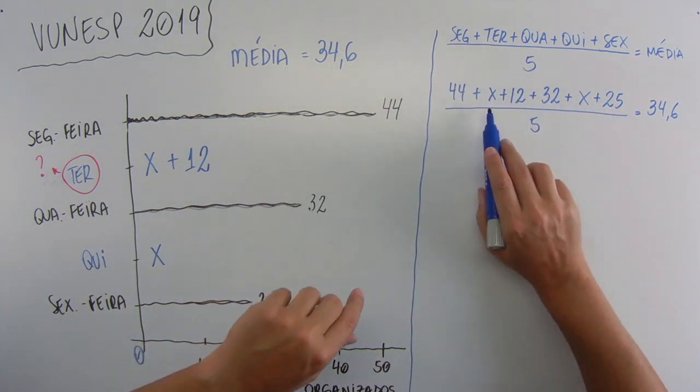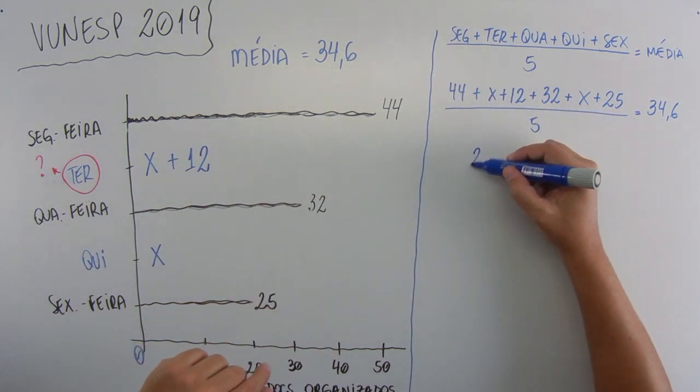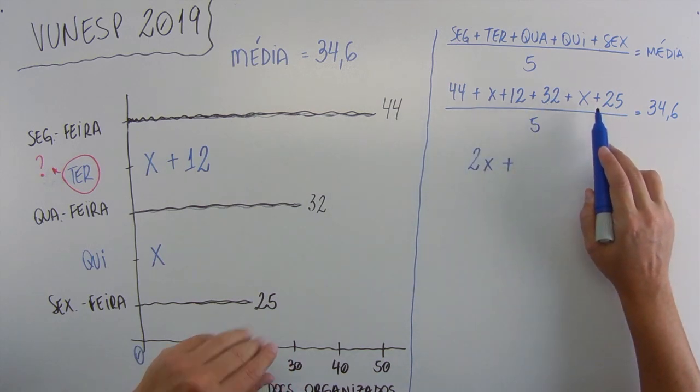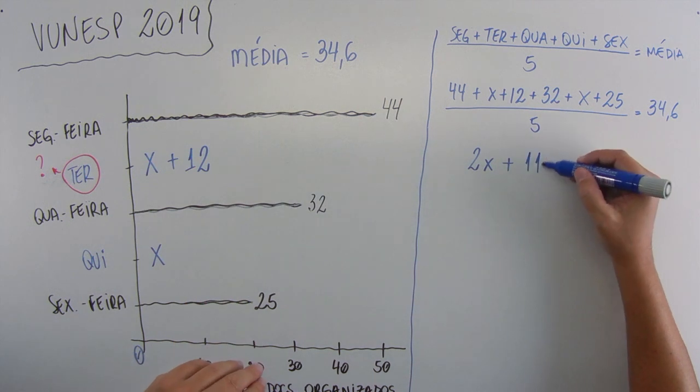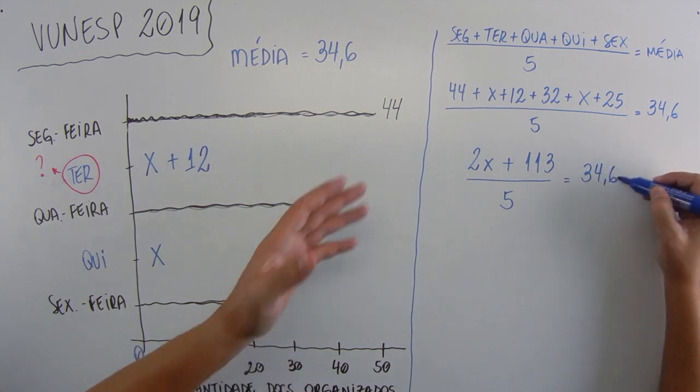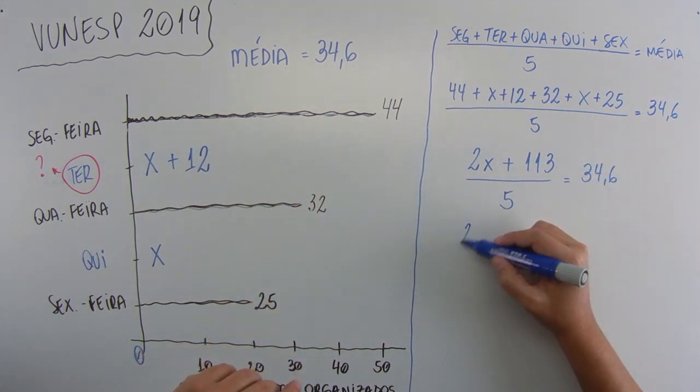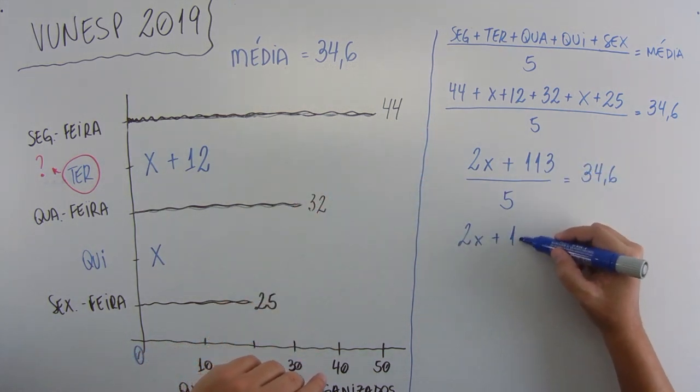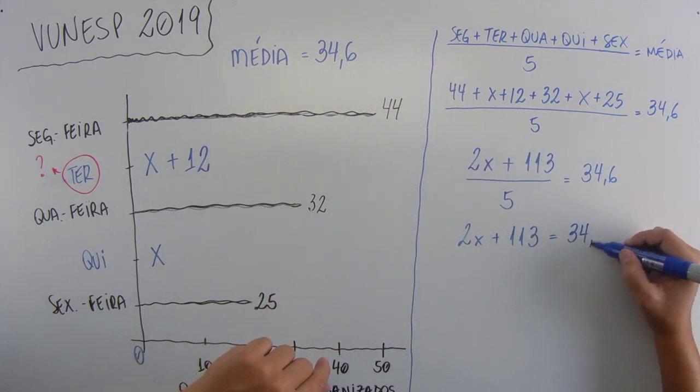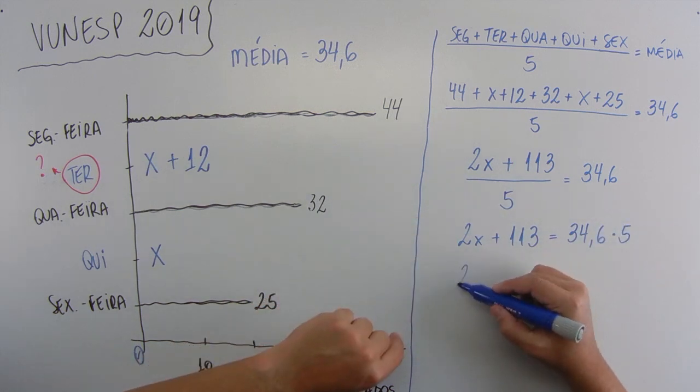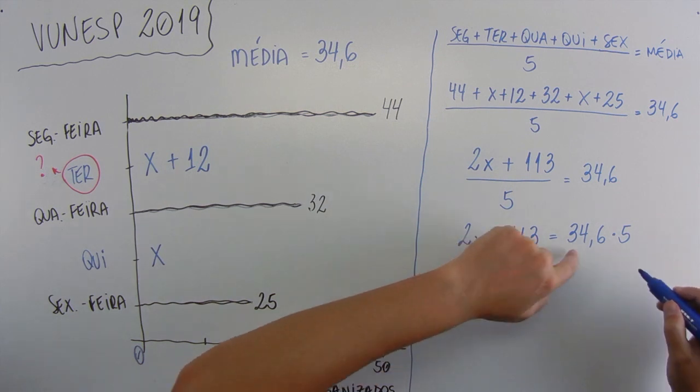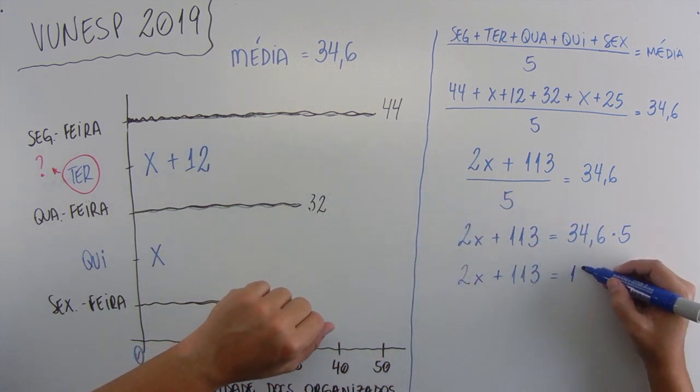Let's add the numbers here. X plus X will give 2X. Then doing 44 plus 12 plus 32 plus 25 will give 113. All this divided by 5, equals 34.6.